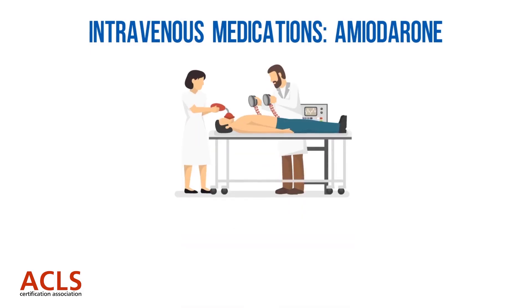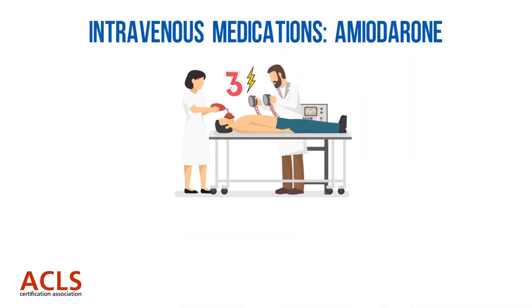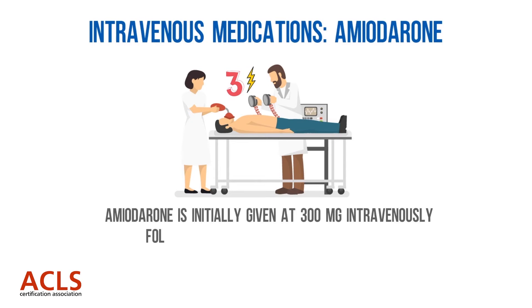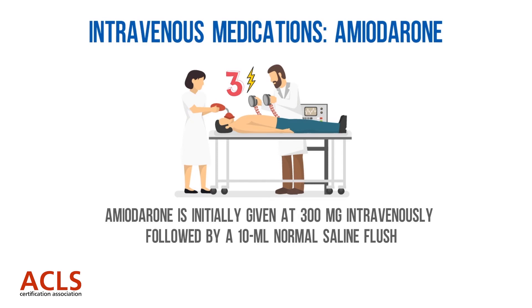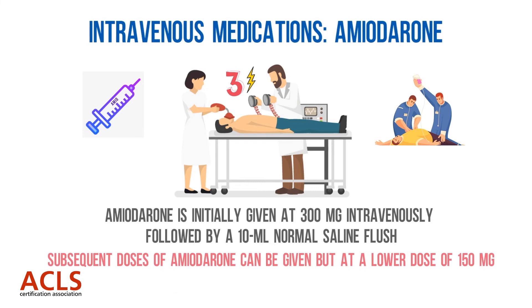Regarding amiodarone: if after three shocks have been given and the patient remains in a shockable rhythm, amiodarone is initially given at 300 mg intravenously, followed by a 10 mL normal saline flush. Again, elevate the extremity and continue with chest compressions when giving these drugs to facilitate transport to the central circulation. Subsequent doses of amiodarone can be given at a lower dose of 150 mg.